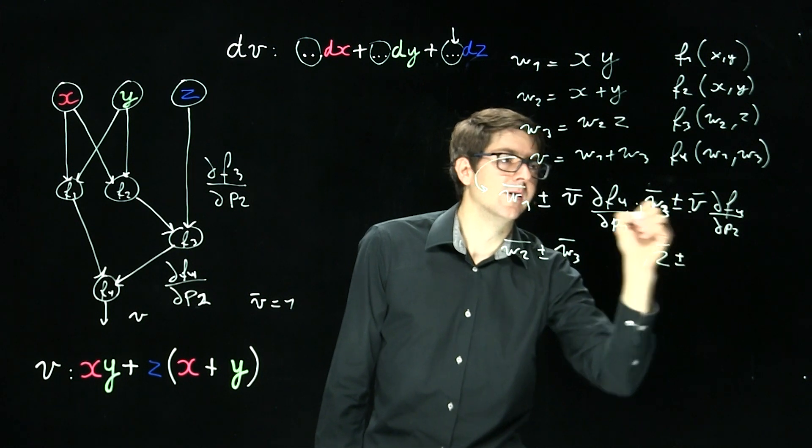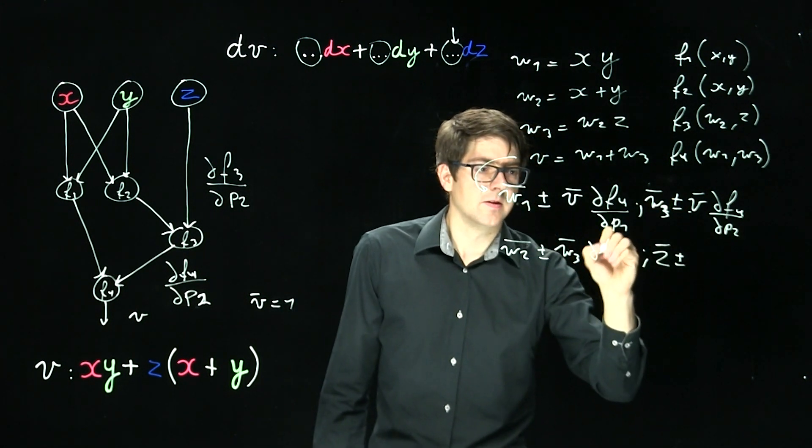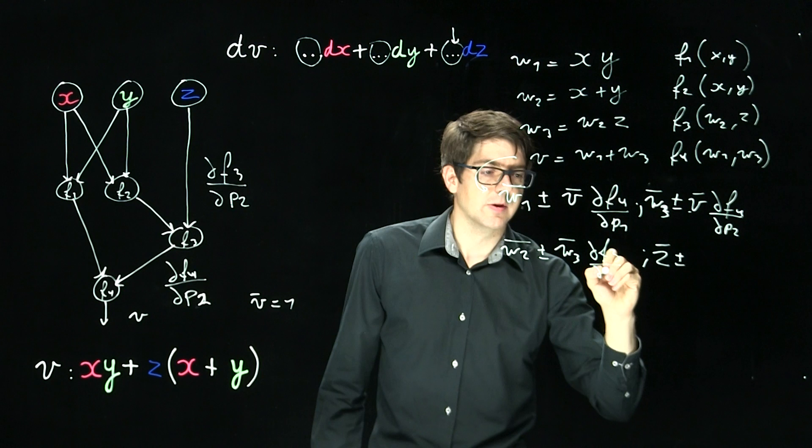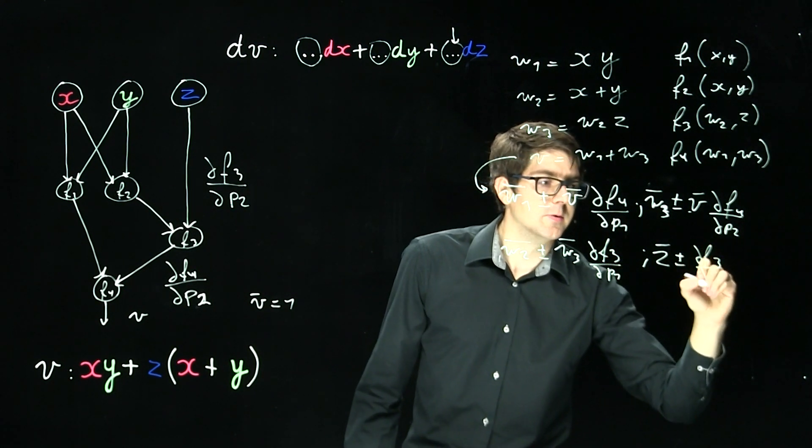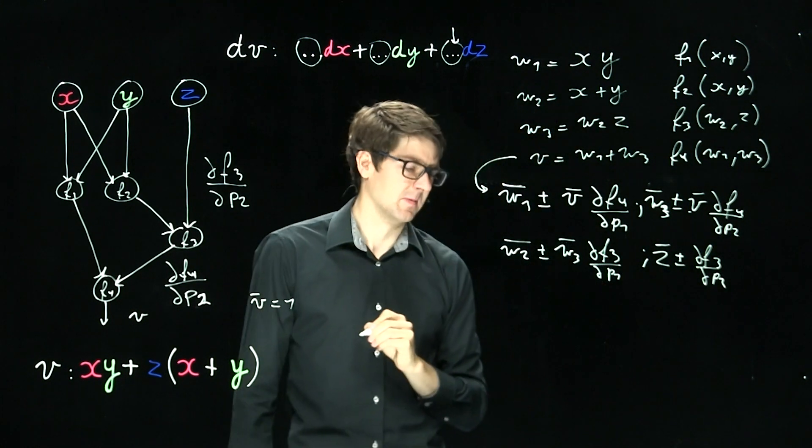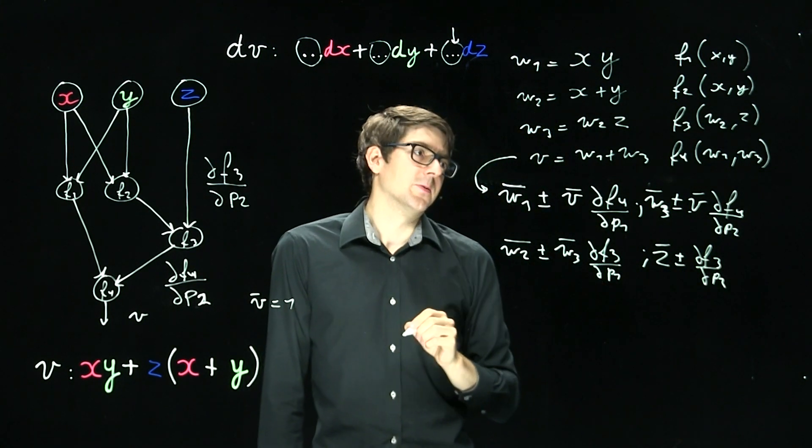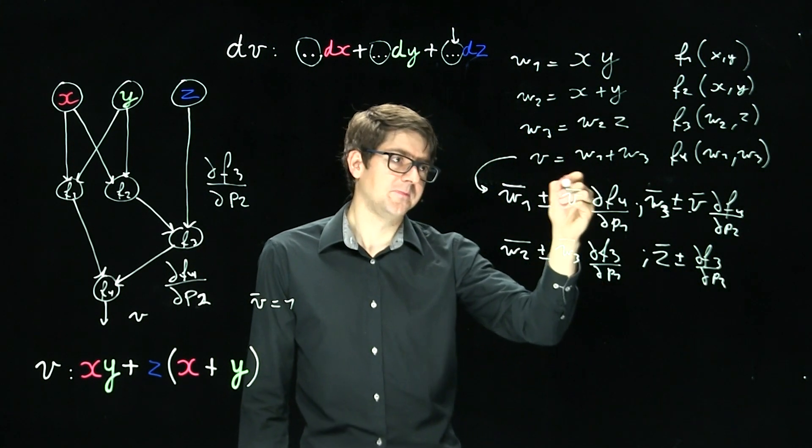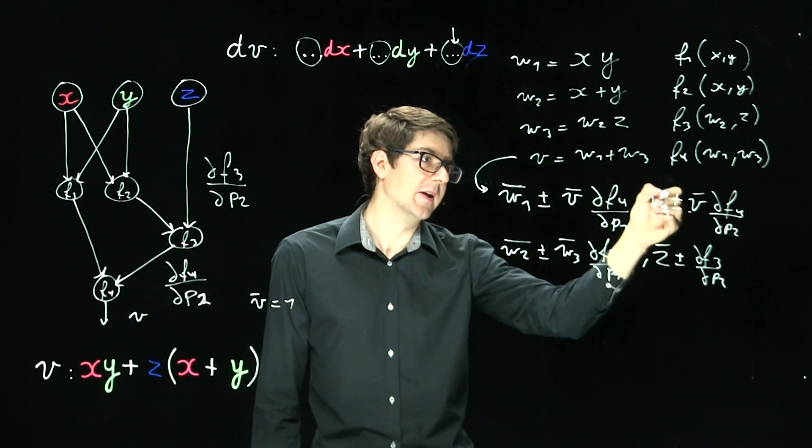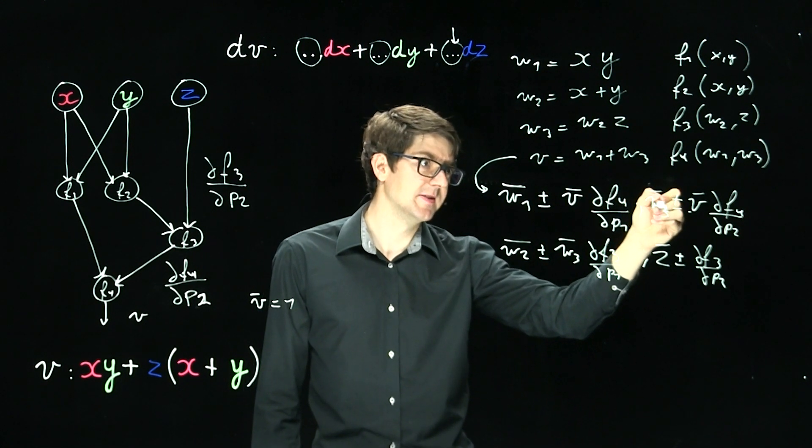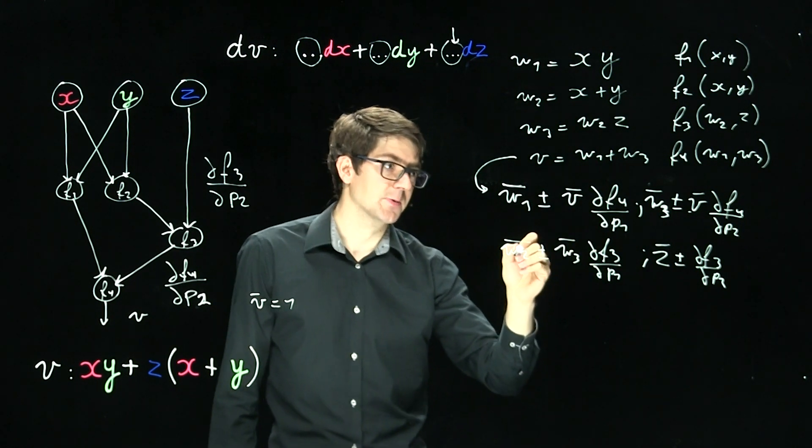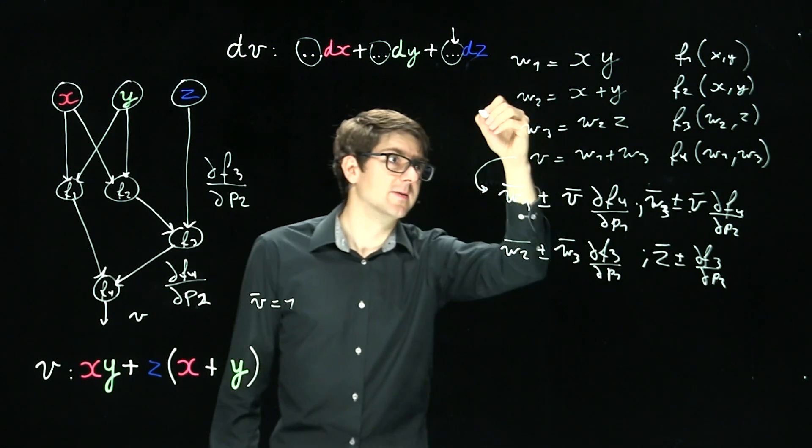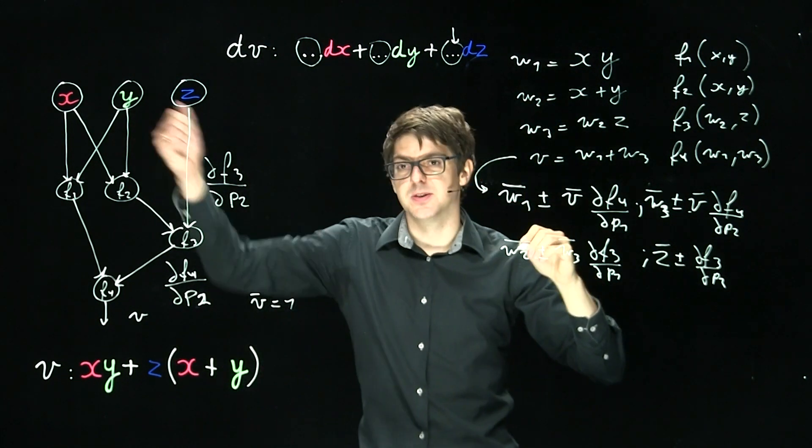And we're bubbling up information from the W3 variable. Another mistake. So we have the partial of F3 with respect to P1 and P2. So the V bar has been propagated and W3 has been updated. And this information is used again here to arrive at W2. And we proceed two times more and then all information comes up.